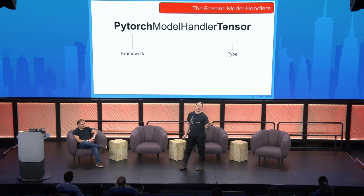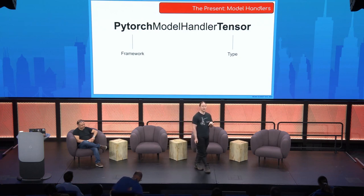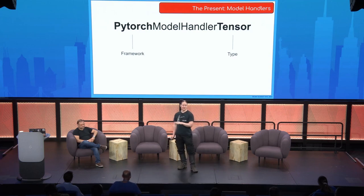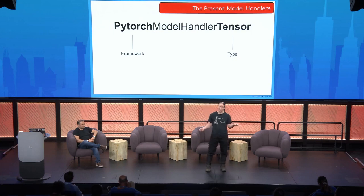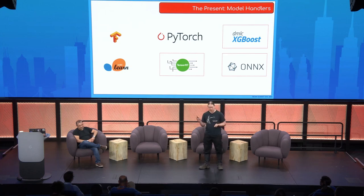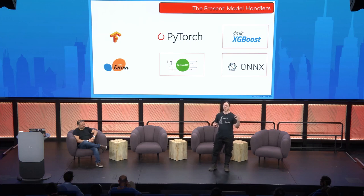Run Inference takes a model handler because it is a generic interface — it can take a model handler that knows how to use a particular framework for a particular kind of inference. For example, we're showing the PyTorch model handler for tensor inputs. We currently have six different model handlers, and if your favorite framework isn't there, we encourage contributions. Since the last Beam Summit, we've added XGBoost, TensorRT, and ONNX model handlers — and the ONNX model handler was a community contribution. ONNX is a standard you can compile models from other frameworks into, which dramatically expands the capabilities of Run Inference.